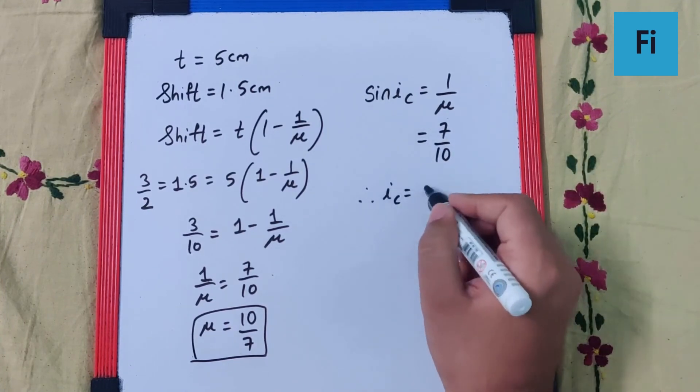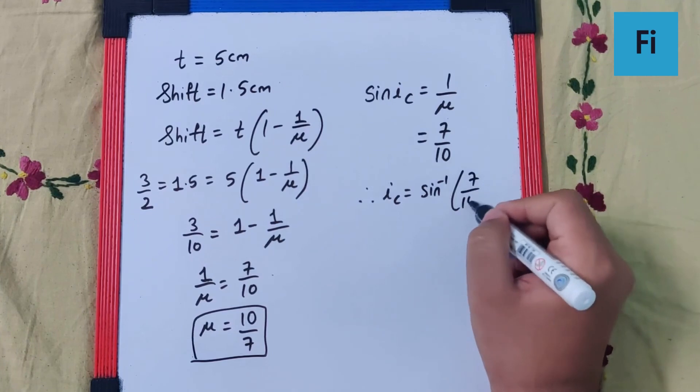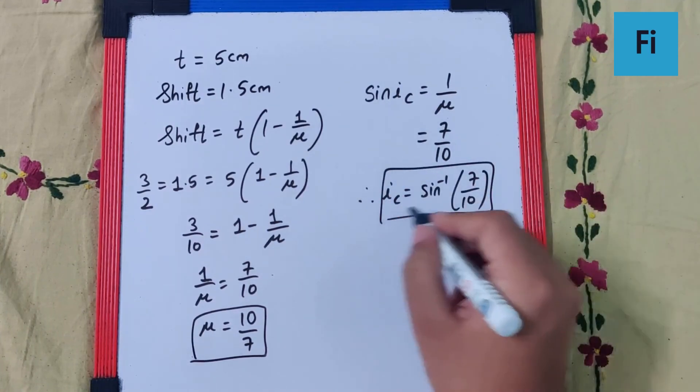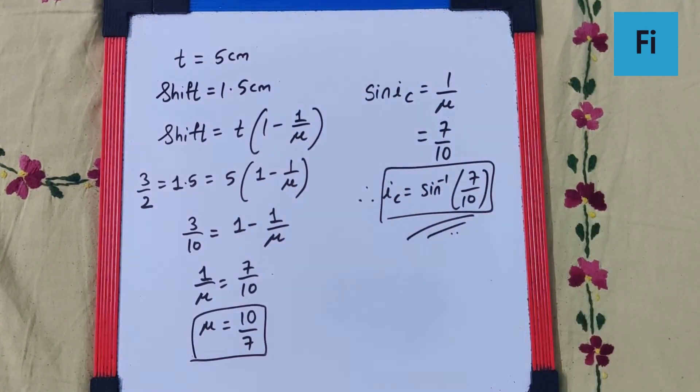So the critical angle will be sin inverse of 7 by 10, and that is our final answer.